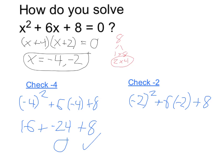And if I quickly look at the other one here, negative 2 squared is 4, plus 6 times negative 2 is negative 12, plus 8, and that's 4 plus 8 is 12, take away 12, and I'm going to get 0 again. So the two solutions to this are x can either be negative 4 or negative 2.